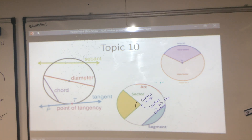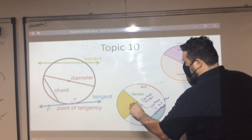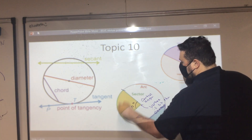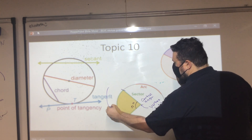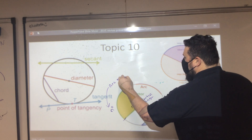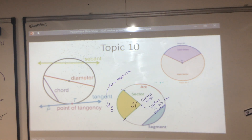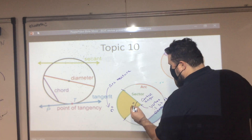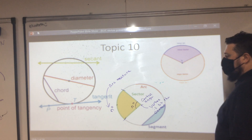Something really nice happens here. If the vertex is at the center, the arc measure is the same as the angle measure. So basically, they're congruent — this angle measure and this arc measure are exactly the same.